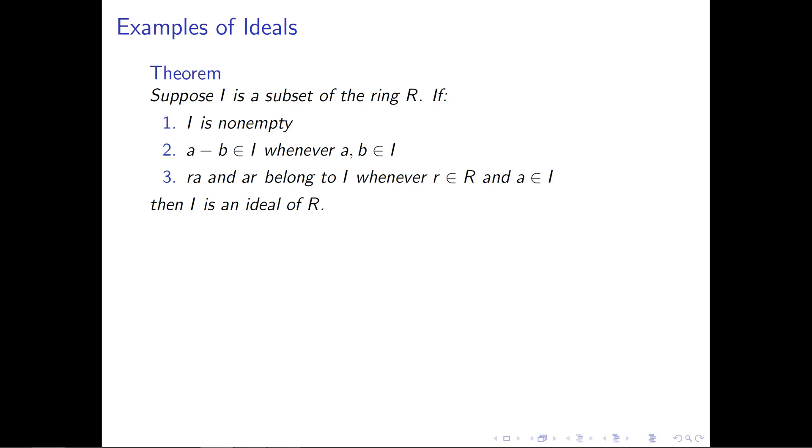First, I must be non-empty. Second, whenever a and b are elements of I, their difference a - b belongs to I. Third, the elements ra and ar belong to I whenever a is in I and r is in R. If these three properties are met, then I is an ideal of R.